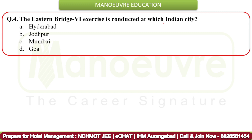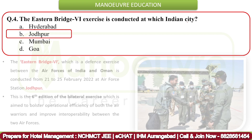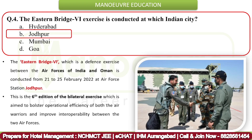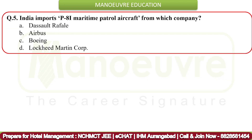Next question: The Eastern Bridge exercise is conducted at which Indian city? The correct answer is Jodhpur, Rajasthan. The Eastern Bridge, a defense exercise between the air forces of India and Oman, was conducted from 21st to 25th February 2022 at Air Force Station Jodhpur. This is the sixth edition of the bilateral exercise, aimed at bolstering operational efficiency and improving interoperability between the two air forces.